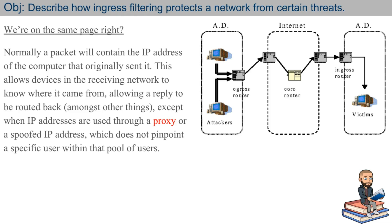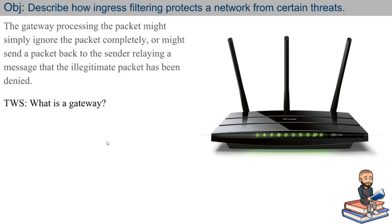Normally a packet will contain the IP address of the computer that originally sent it, and this allows devices in the receiving network to know where it came from, allowing a reply to be routed back. When IP addresses are used through a proxy or a spoofed IP address, this does not pinpoint a specific user. So if the egress filter doesn't stop the attackers, there's always a backup ingress filter once traffic is being sent into the network — a nice layered security approach.